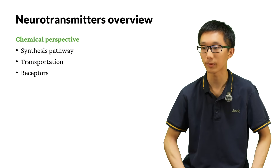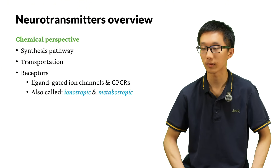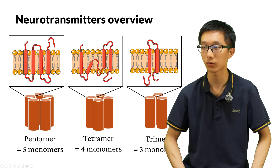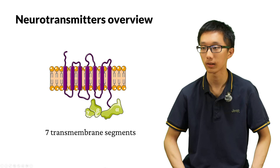We can also learn about the types of receptors. There are two types: ligand-gated ion channels and GPCRs, also called ionotropic receptors and metabotropic receptors. Ionotropic receptors are made of many single monomers — for example, pentamers, tetramers, and trimers, depending on the type of receptor. A metabotropic receptor, or GPCR, is usually a protein with seven transmembrane segments, and it usually acts as a monomer, though it sometimes also forms dimers.